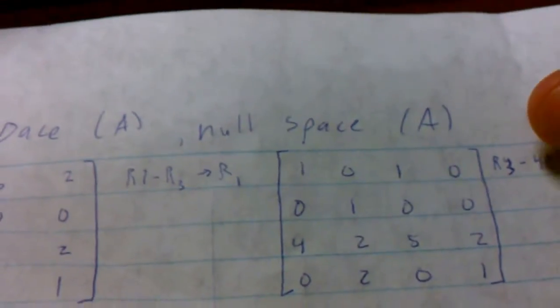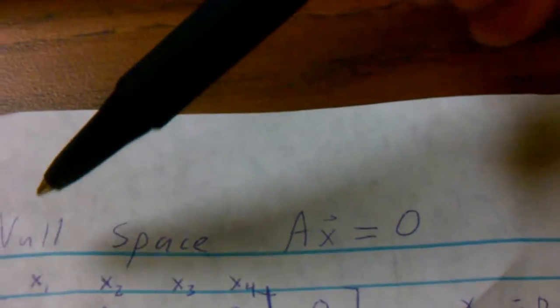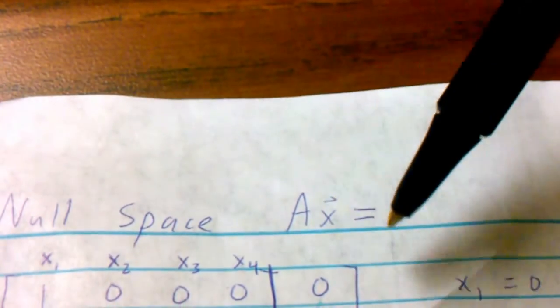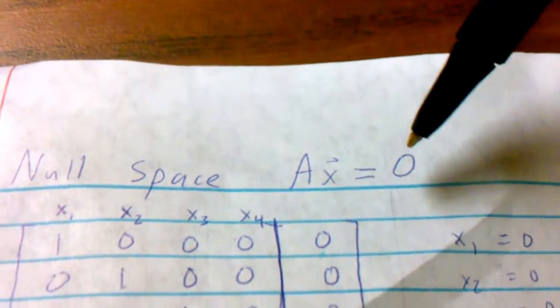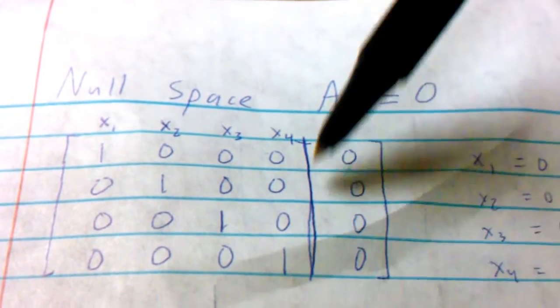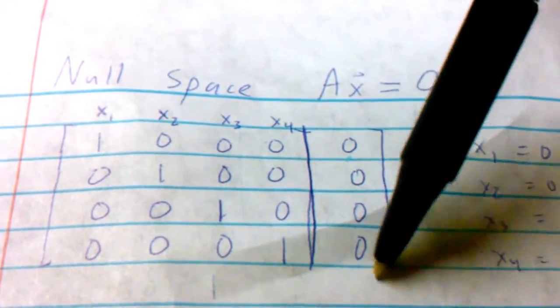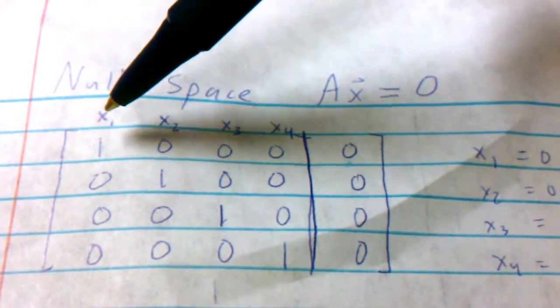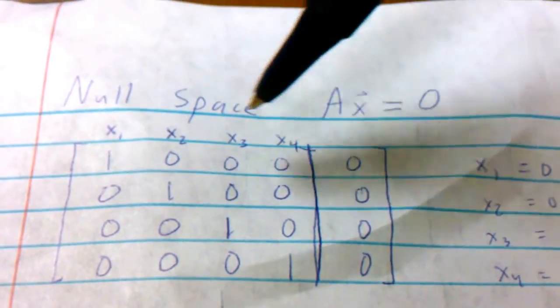Now for null space. Null space is defined by A as x vector equals 0. So to do that, we're going to augment on a row of zeros. And this would be the defining of x: 1, 2, 3, and 4.